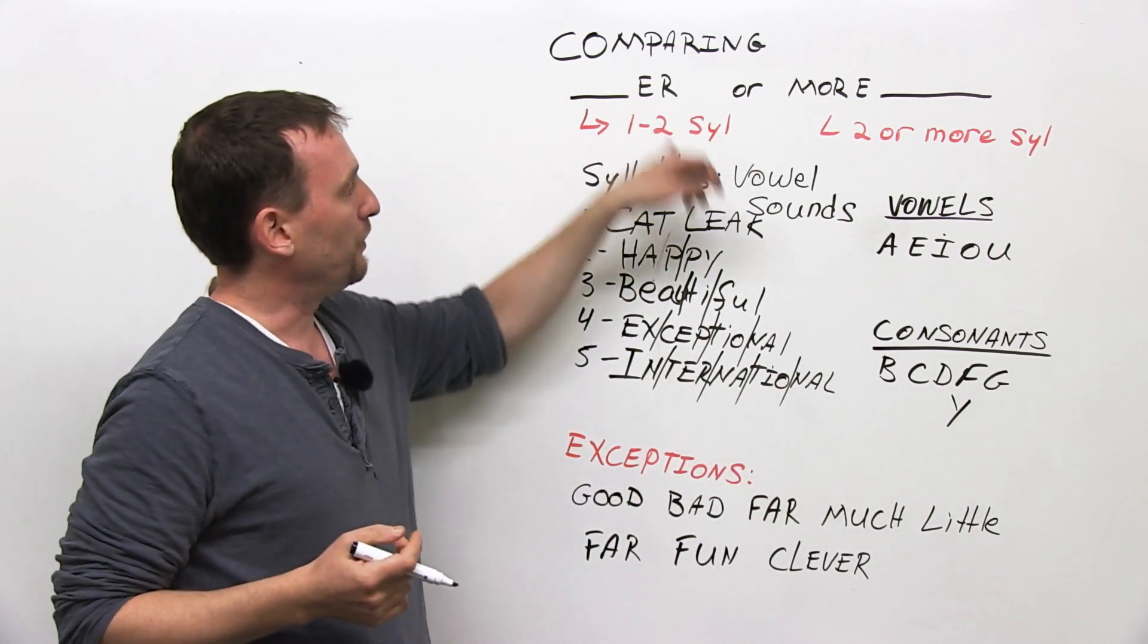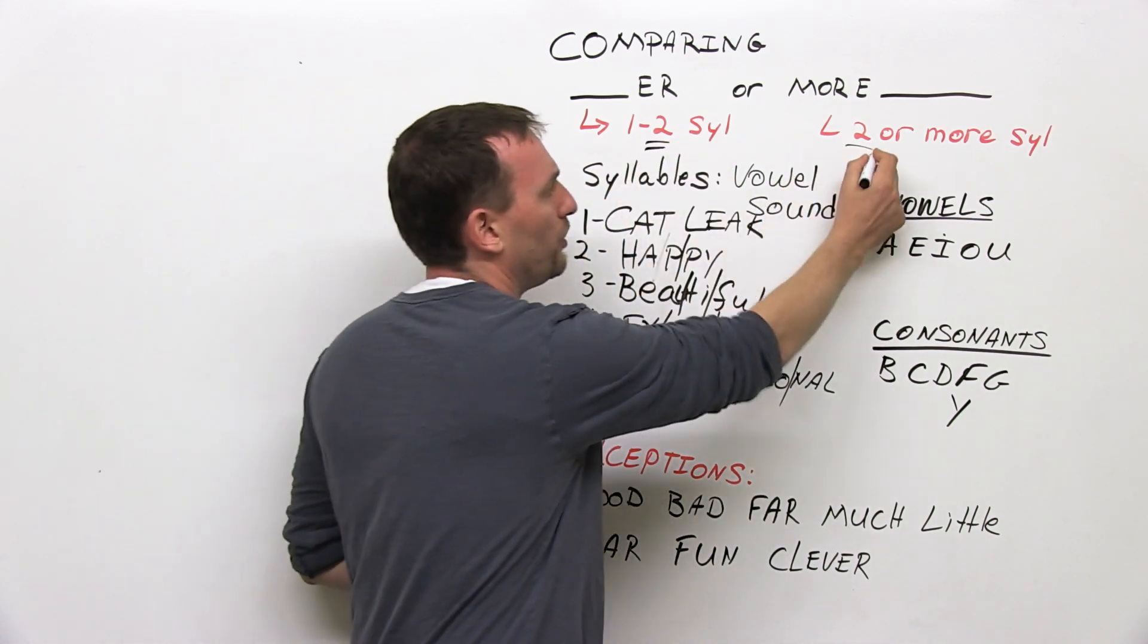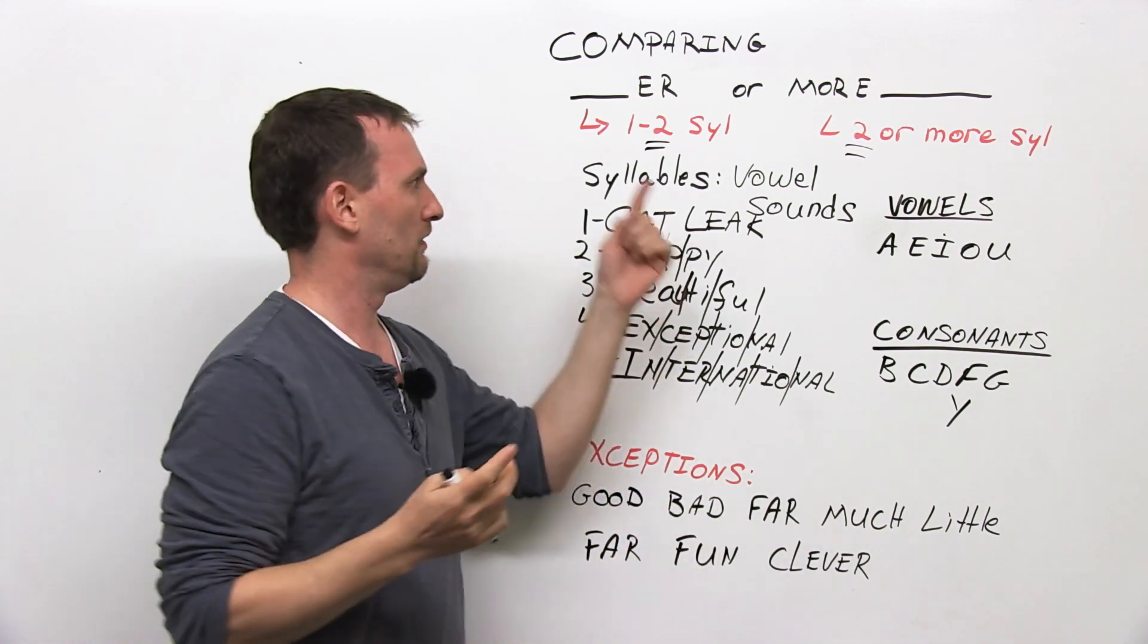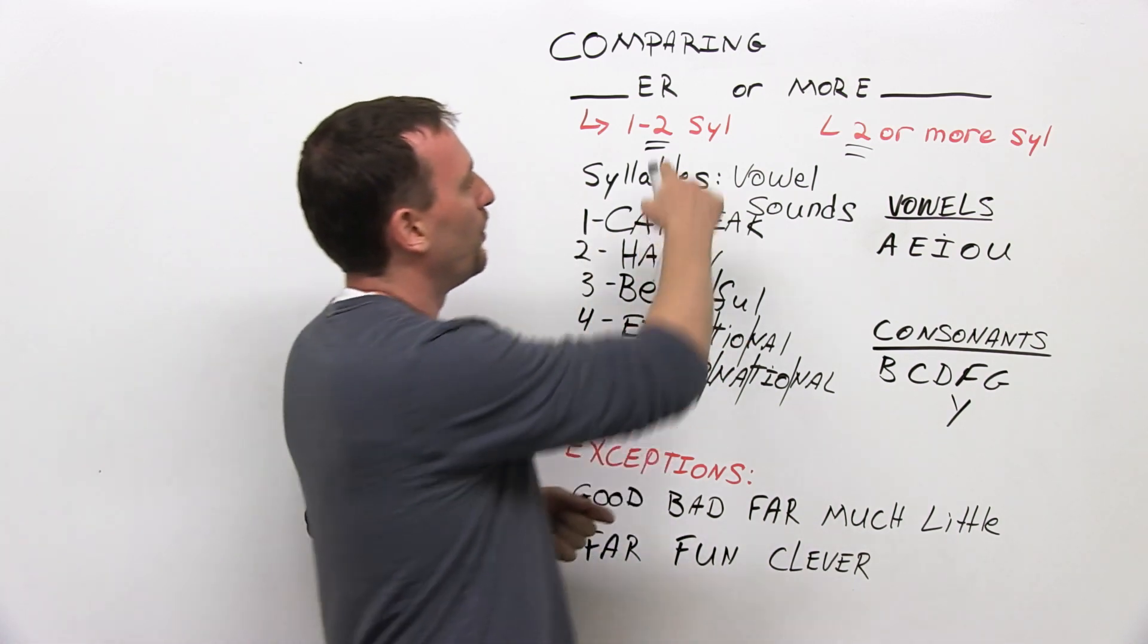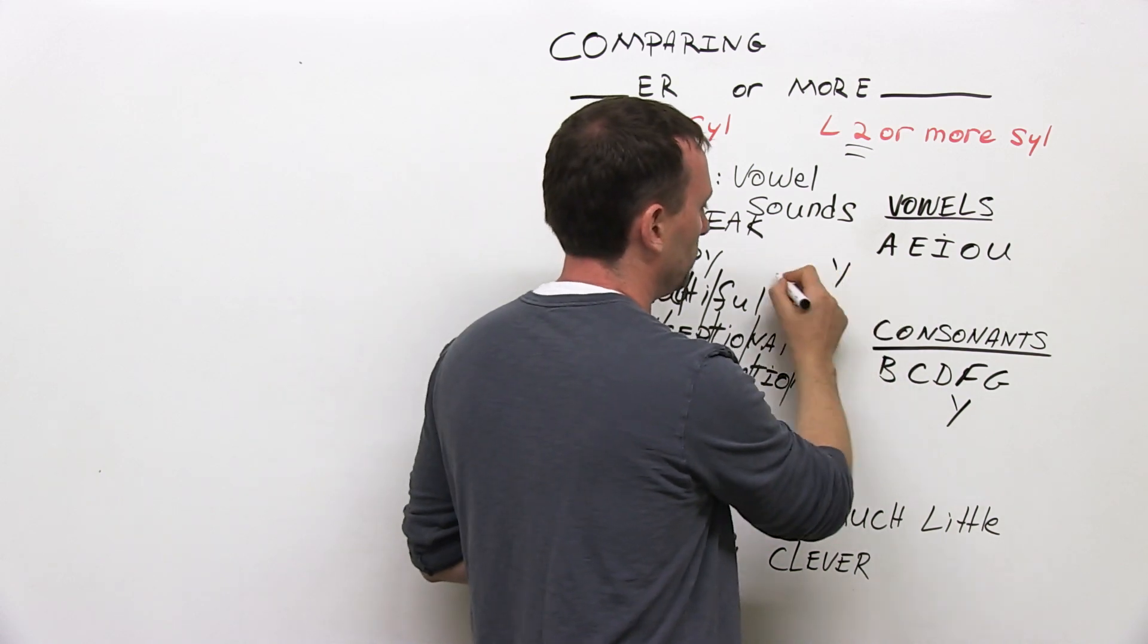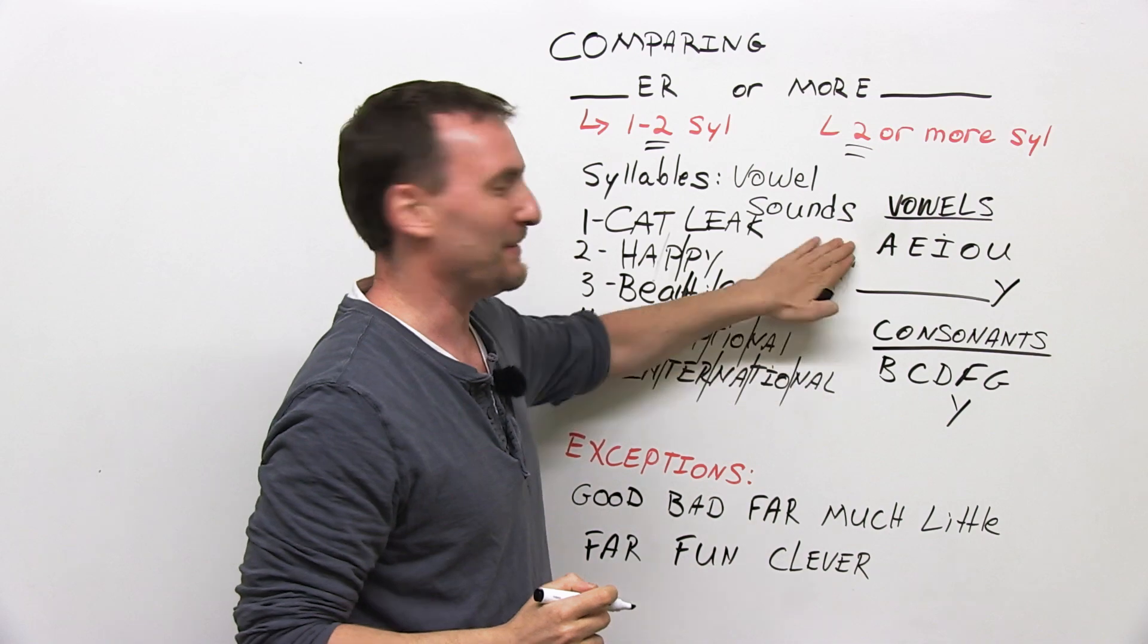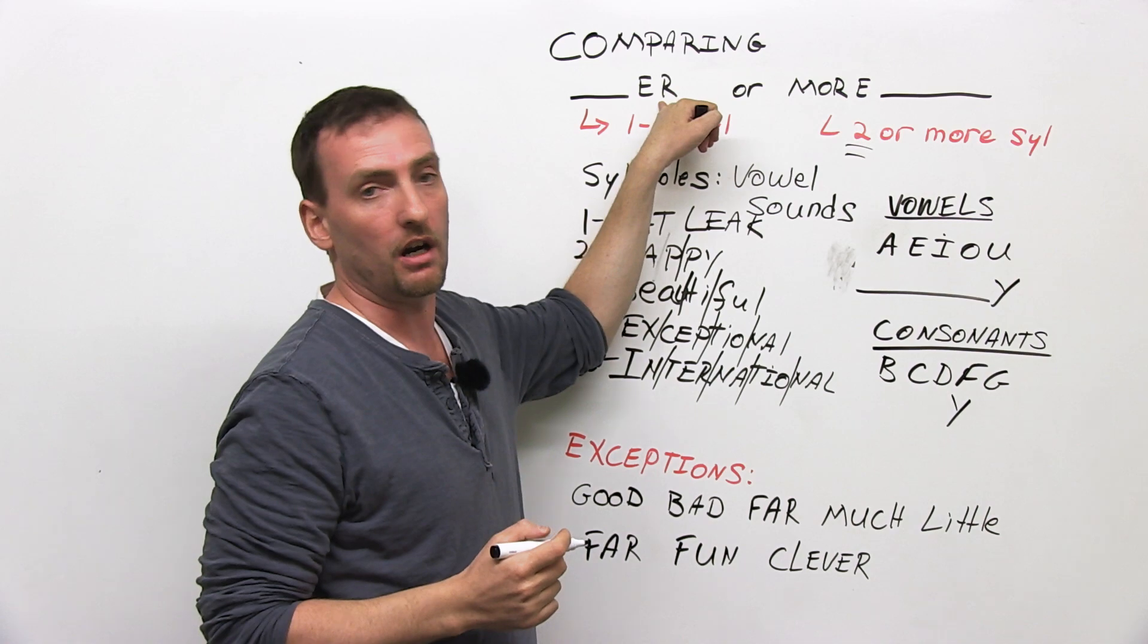So now, here we go back, we see one or two syllables, or two or more syllables. So now you're thinking, okay, well, if I have a two-syllable word, I still don't know which one to use, right? Well, here's the answer. One or two syllables. If the word ends in y, I'll put it here. If the word ends in y,